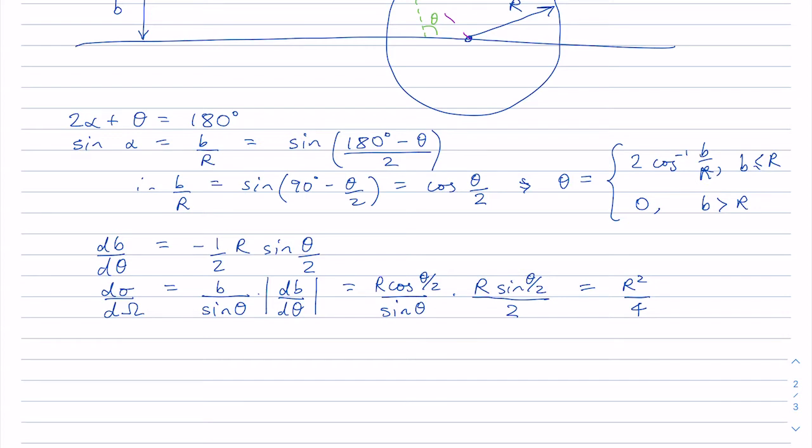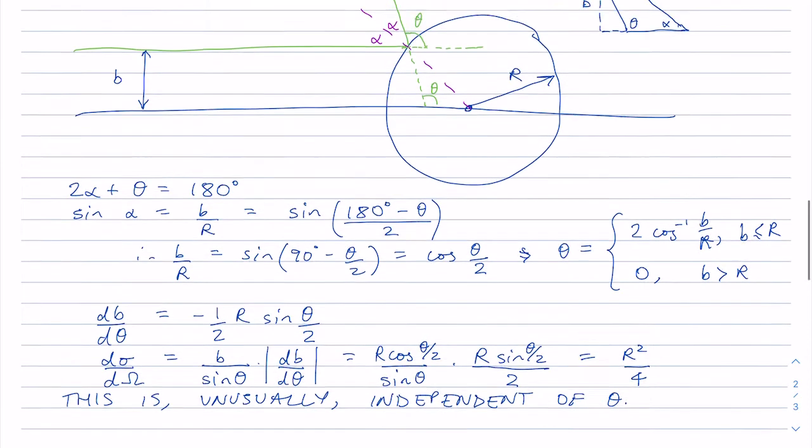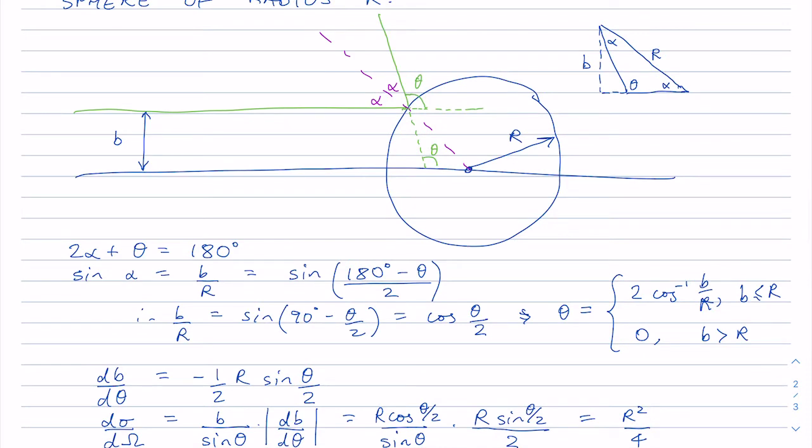Unusually, in this case, it does not depend on theta, but that's not usually the case. What this is basically saying is that you're equally likely to scatter in any direction theta. And so that's very unusual. It's just an effect of the particular geometry of the hard sphere.